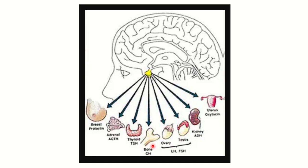Here we can see that bone development and other organ development are driven by growth hormone from the pituitary gland, which is very essential. The ovaries and testes are also influenced by the pituitary gland through follicle-stimulating hormone and luteinizing hormone. The pituitary also has action on the kidney and uterus.